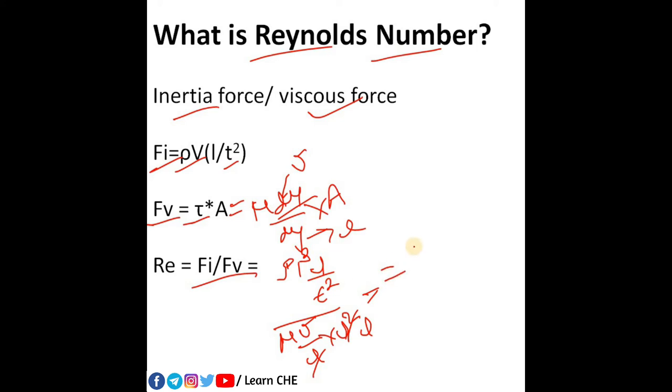So I can write here rho, L square, then L square by T square will become V square, that is velocity square.